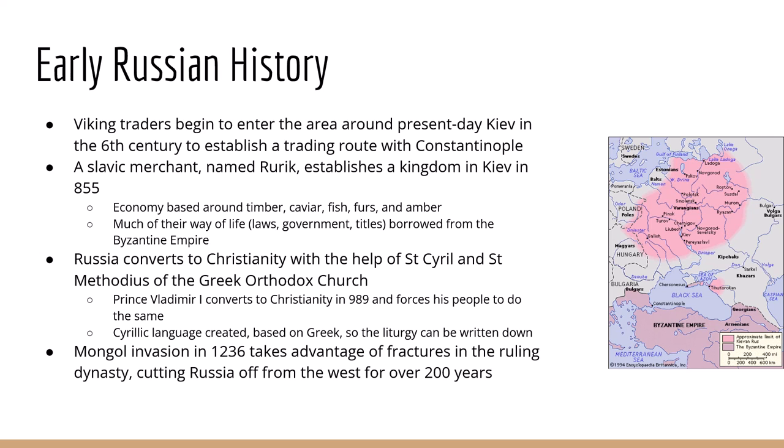A Slavic merchant named Rurik establishes a kingdom in Kiev around 855, and the descendants of Rurik will rule until 1598. Much of their way of life — their laws, government system, and titles — all emulate the Byzantines. Russia converts to Christianity when St. Cyril and St. Methodius of the Greek Orthodox Church come to the Kievan Rus to Christianize the population. St. Cyril develops the Cyrillic language, based on the Greek alphabet, so that the liturgy and writings of the Greek Orthodox Church could be recorded.